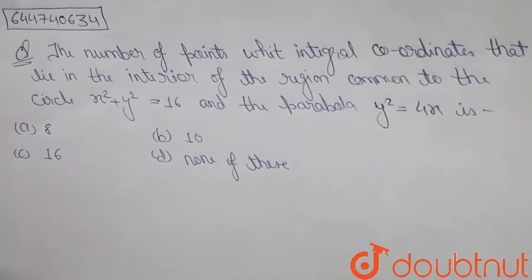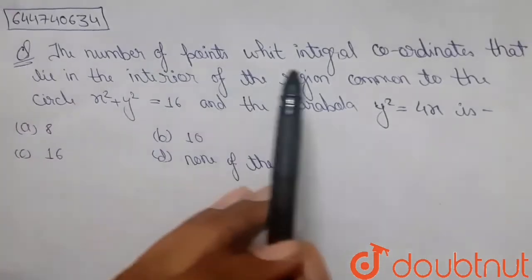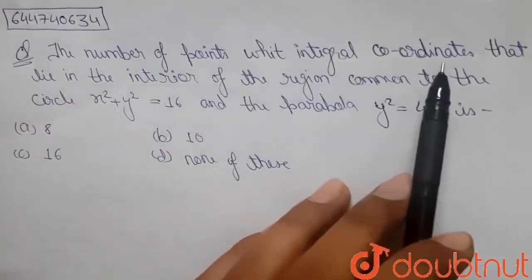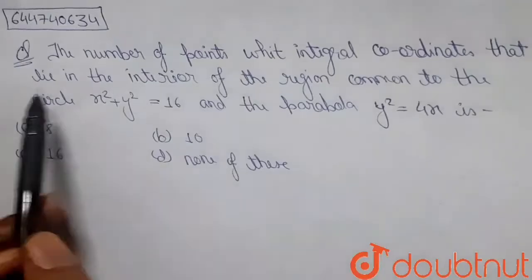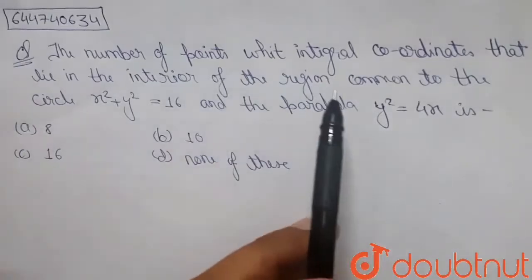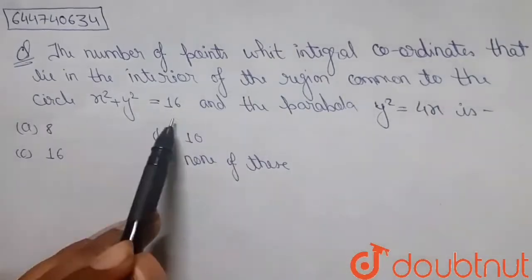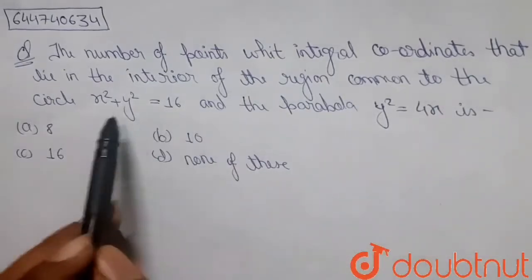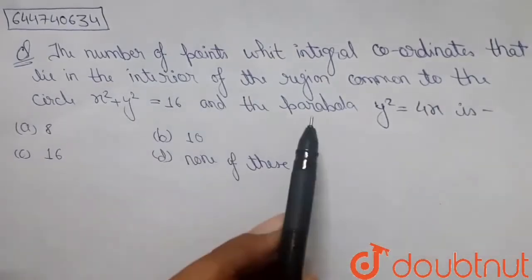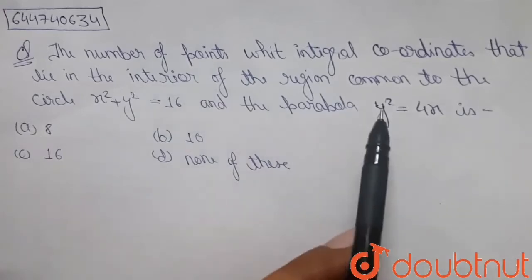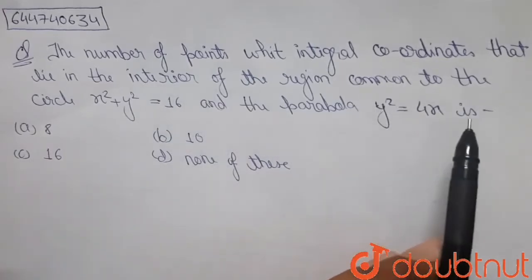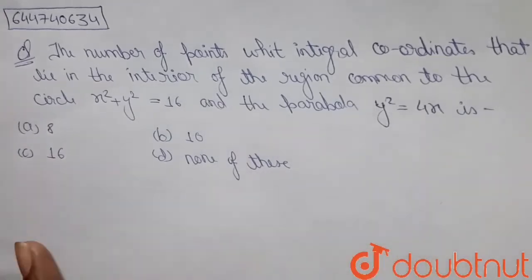Hello friends, here's a question. It says that the number of points with integral coordinates that lie in the interior of the region common to the circle x² + y² = 16 and the parabola y² = 4x.